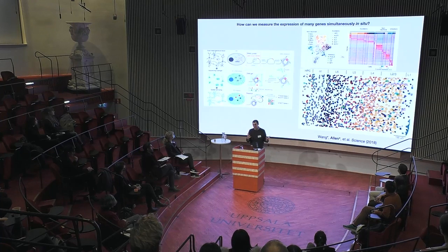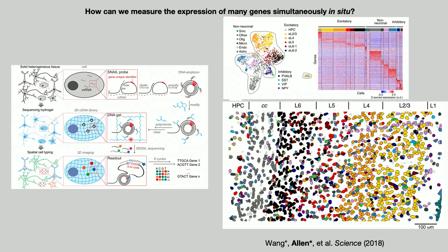I'm running out of time, so I'll briefly mention this last paper. Another major question is identifying the cell types in the brain — there are hundreds of cell types, and we want to map them through single-cell genomics and their spatial location. We developed a technique that allows us to measure the expression of up to a thousand genes simultaneously in an intact piece of tissue and relate it to neural activity and other cellular features.